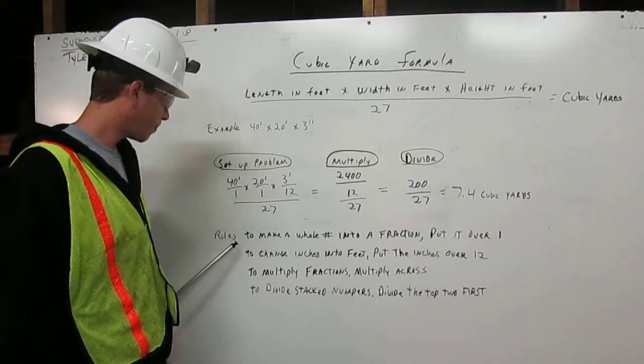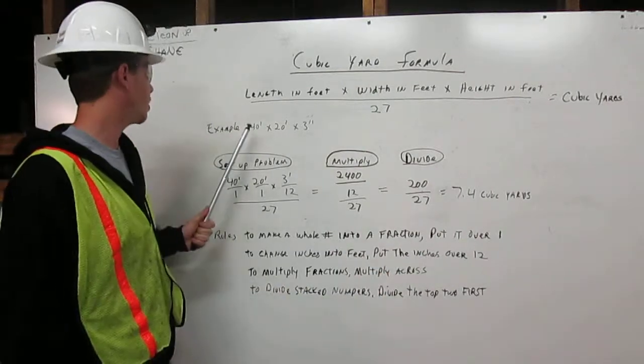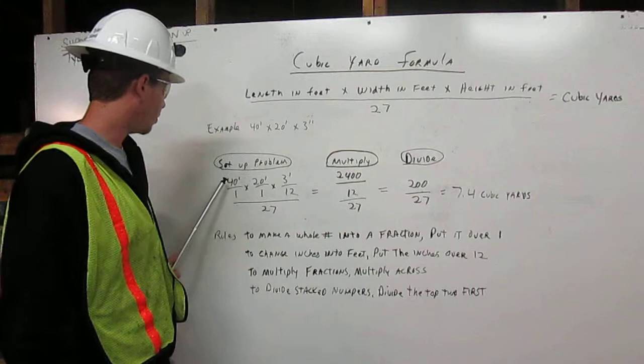And the rules to remember: to make a whole number into a fraction, put it over 1. As we did here, we had 40 feet, so we put 40 feet over 1.